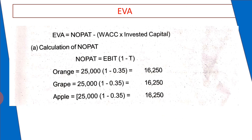Secondly, calculation of EVA. EVA equals NOPAT minus weighted average cost of capital into invested capital. The weighted average cost is multiplied by the invested amount of capital to get the cost of capital, which is then deducted from NOPAT. NOPAT equals EBIT into (1 minus T). EBIT is 25,000 for all three companies, and the tax rate is 35% for all. So NOPAT equals 25,000 into (1 minus 0.35) = 25,000 into 65% = 16,250. NOPAT is the same for all companies.